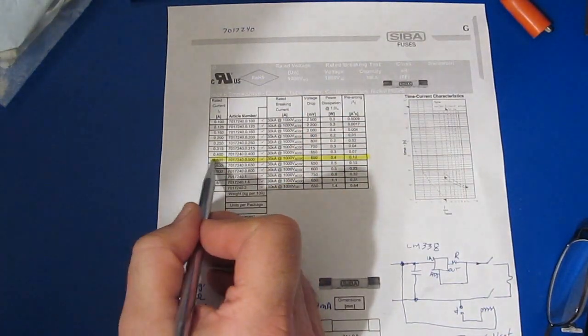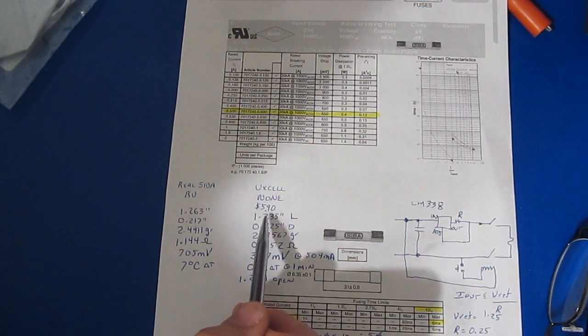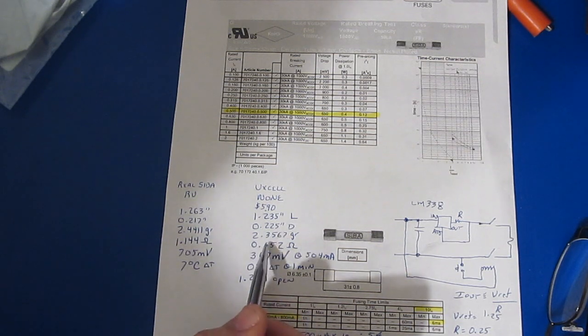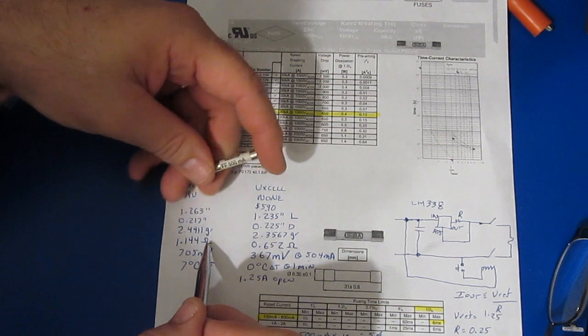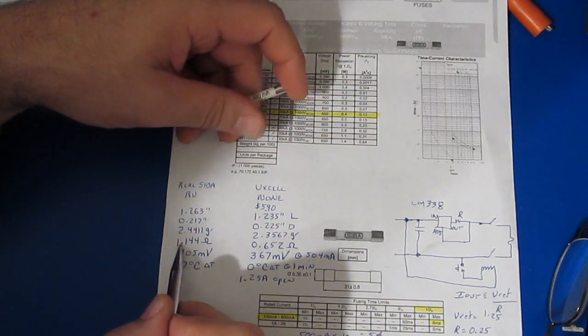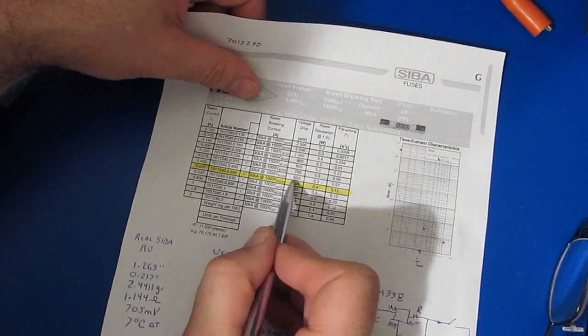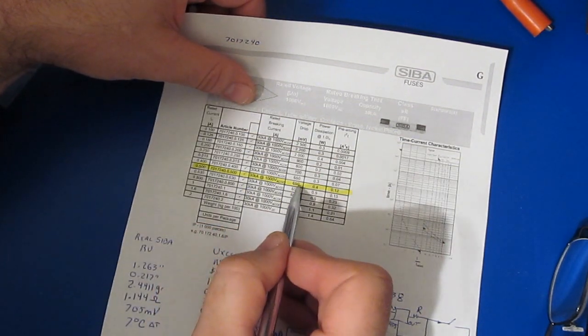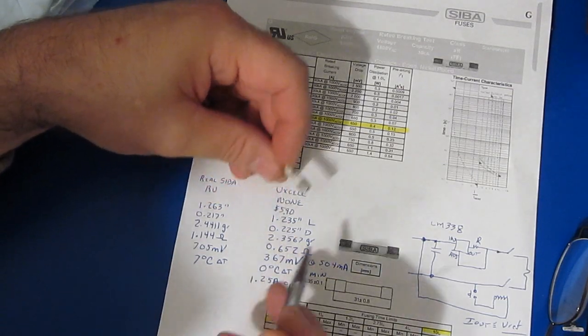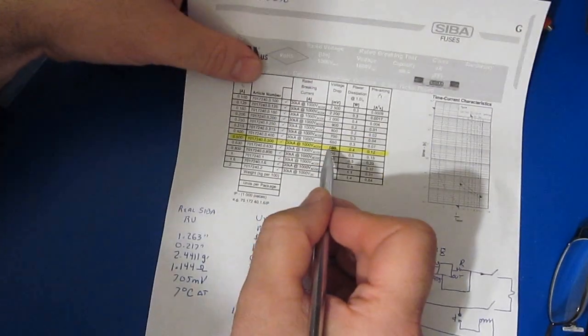Here we're looking at Siba's datasheet, and the part that I have highlighted is the one we're interested in. The column on the right is for the fuses that I purchased, cost on these is $5.90 each. Again, the length was slightly shorter, it's a little bit larger diameter, it was slightly lighter. Notice when we look at the DC resistance, there's quite a bit of difference between what I'm calling a real Siba fuse and this counterfeit part. The real part measures 1.144 versus 0.652 ohms. And again, if we refer to the table, the voltage drop it calls for for this particular fuse at 500 milliamps would be 650 millivolts. With 500 milliamps we measured roughly 705 millivolts drop across this particular fuse. On our counterfeit fuse we measured 367 millivolts drop, about half of what the datasheet calls for.